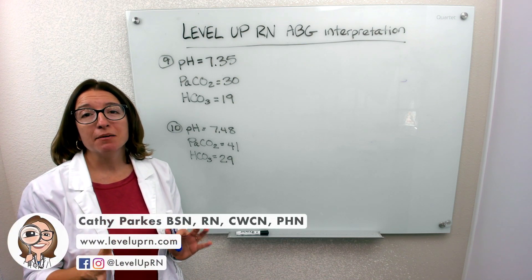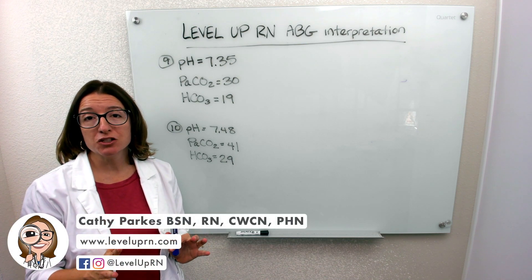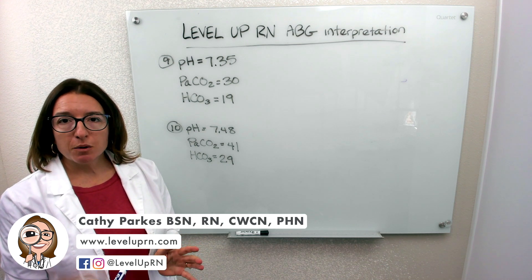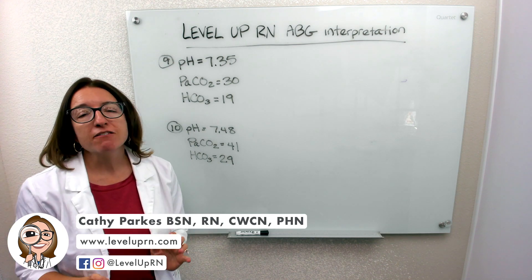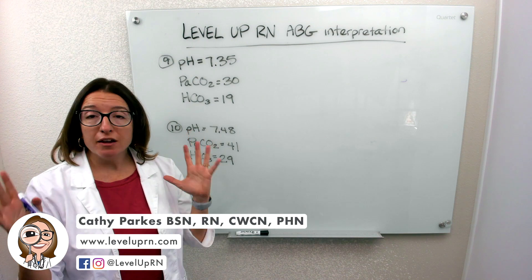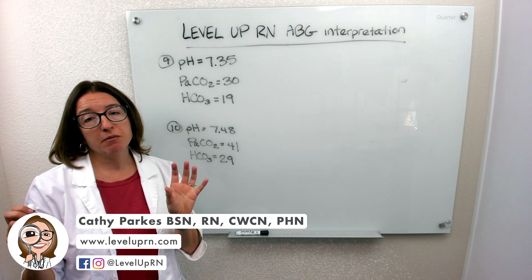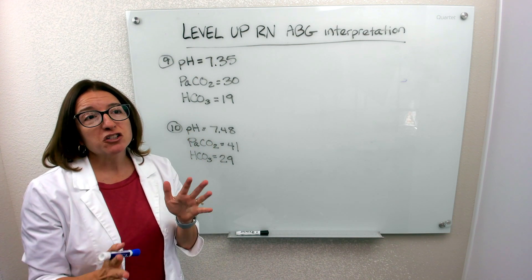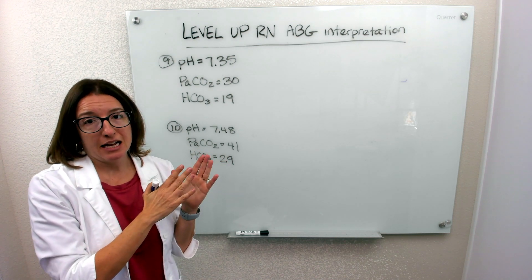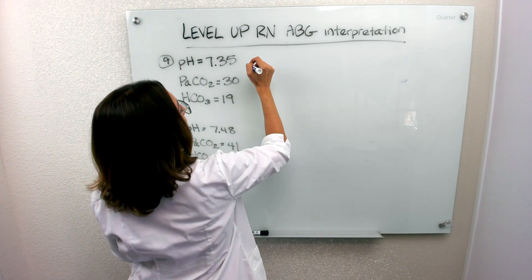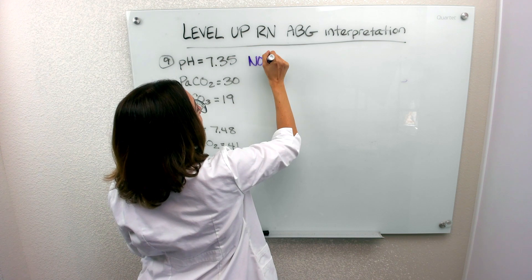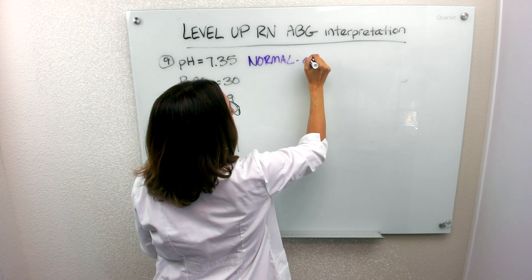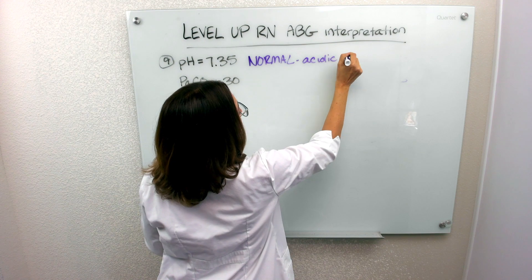We're back with more ABG interpretation problems. We're on problem 9. The pH in this problem is 7.35, which we know is within range. Our range is 7.35 to 7.45. It's in range, but it's kind of on the acidic side. So we have a normal pH, but it's on the acidic side of things.